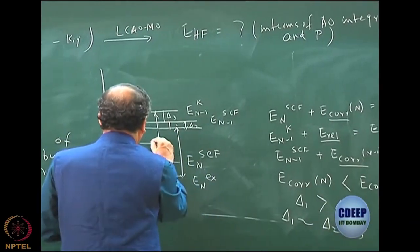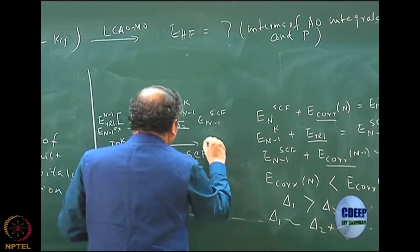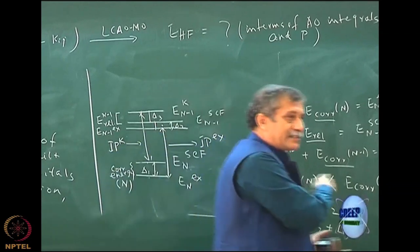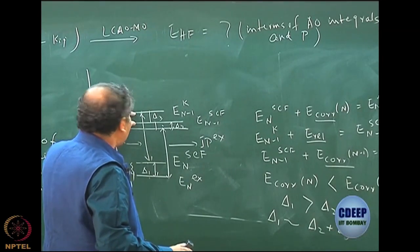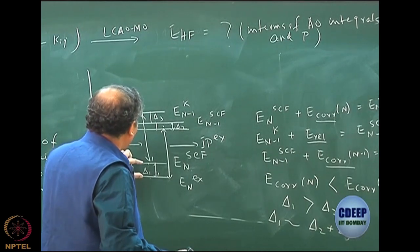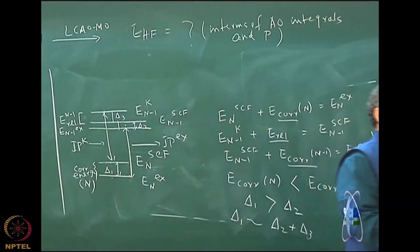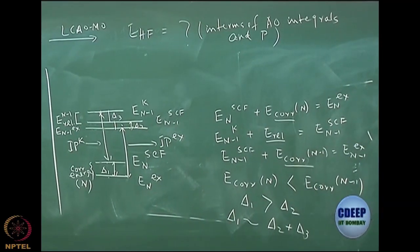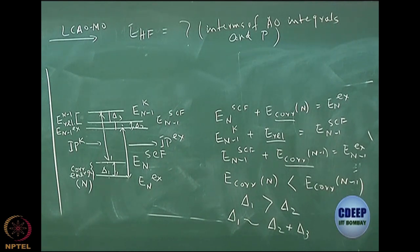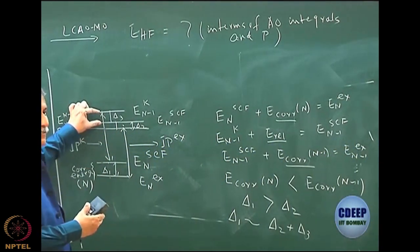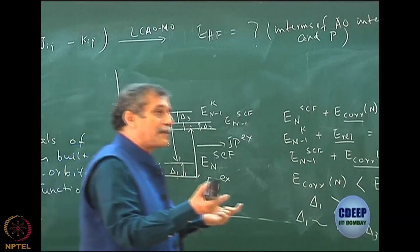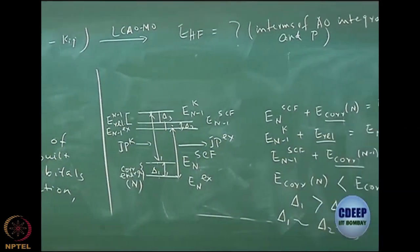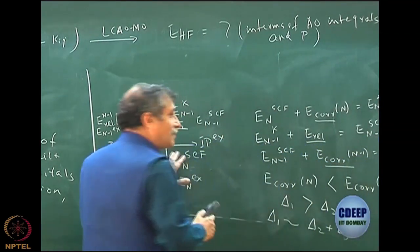This is IP Koopmans, this is IP exact, because this is exact minus exact. Delta 1 is greater than delta 2 — that you agree. There is an additional delta 3, so hopefully these two together would match delta 1. It will never be exact, but the Koopmans IP is a good approximation to the exact IP, since delta 2 plus delta 3 may come close to delta 1.